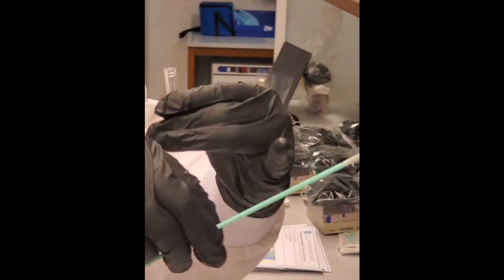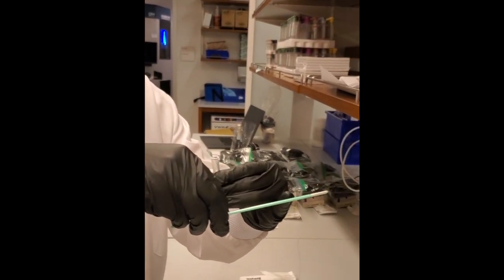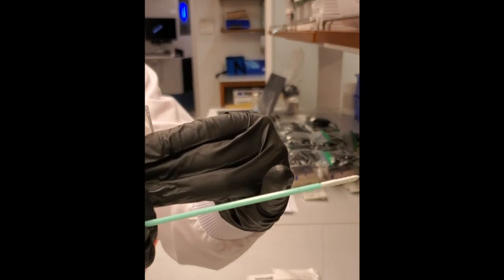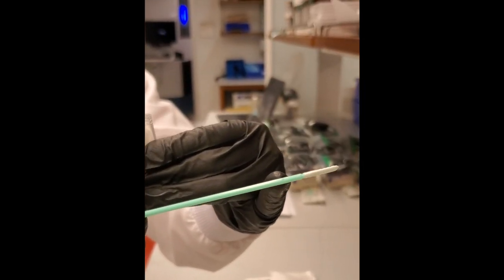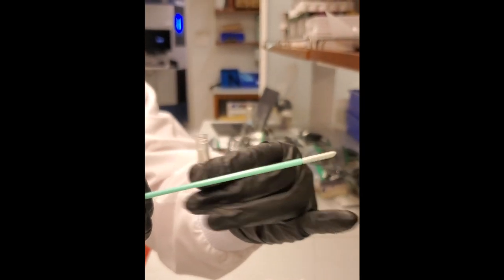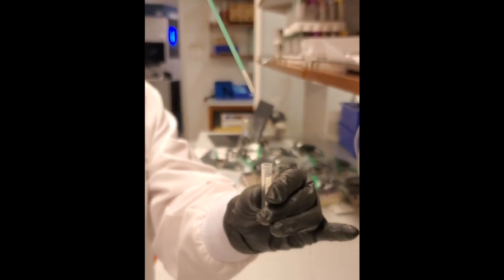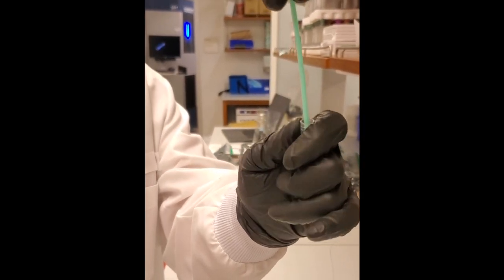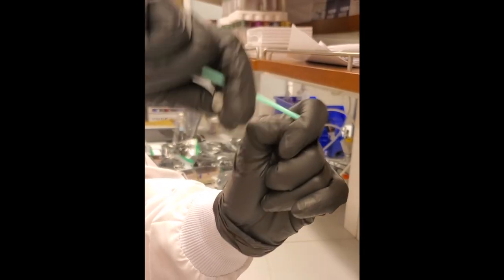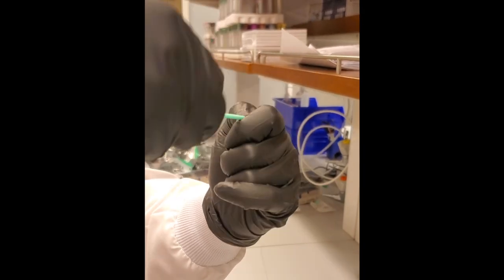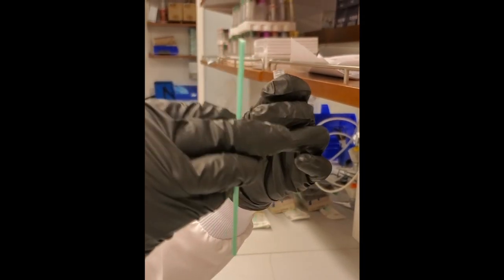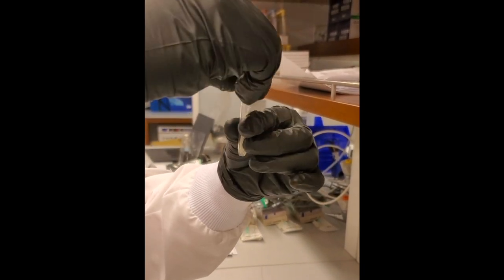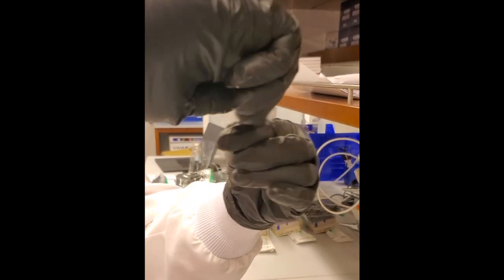You're going to snap the end of the swab inside the bar-coated tube. Gently insert your swab, snap it off, twist it a little bit, and you can discard this end. Then carefully put the cap on.